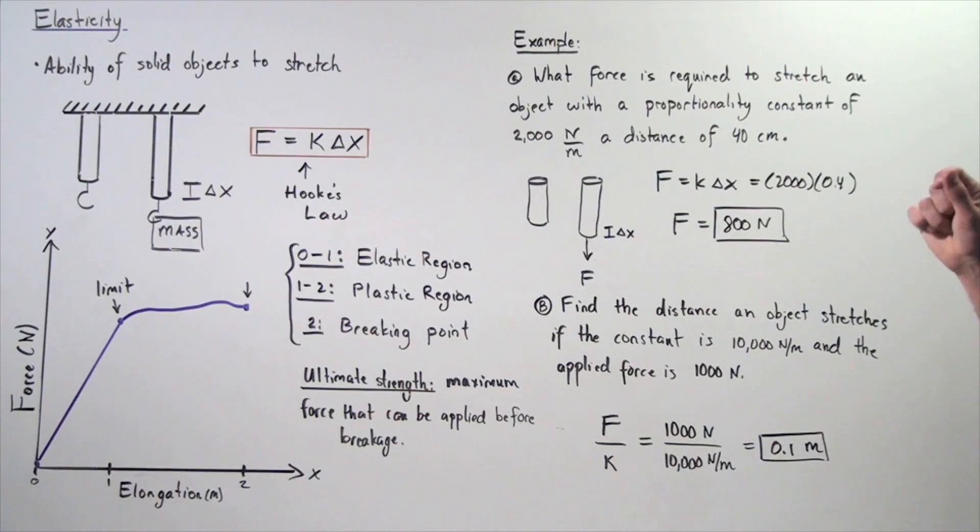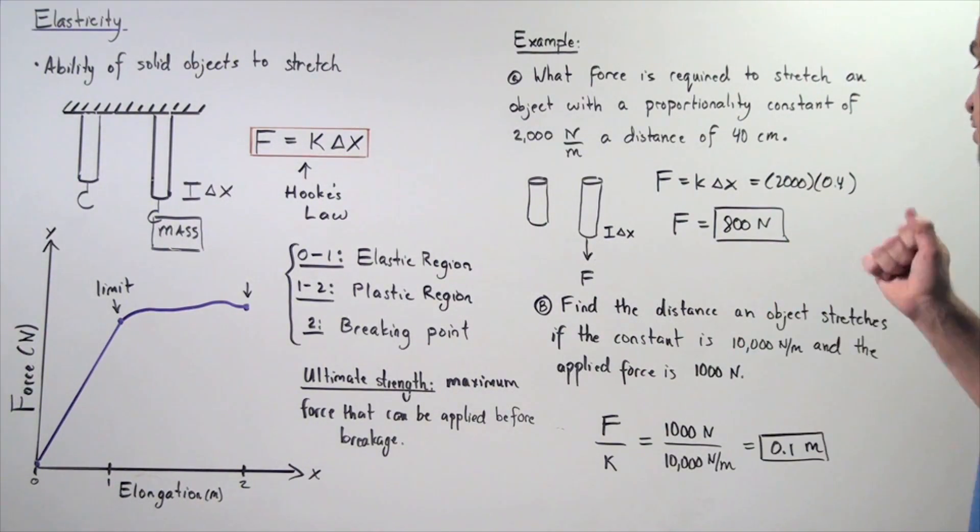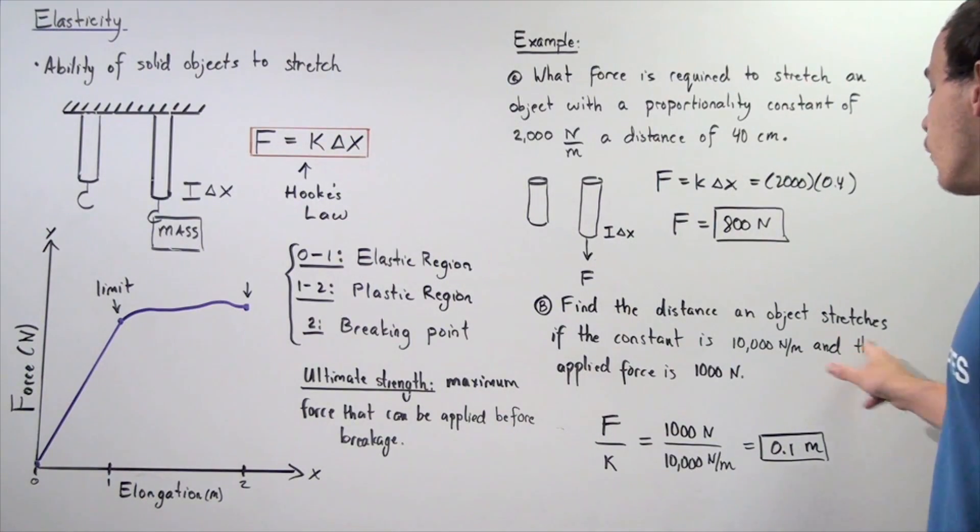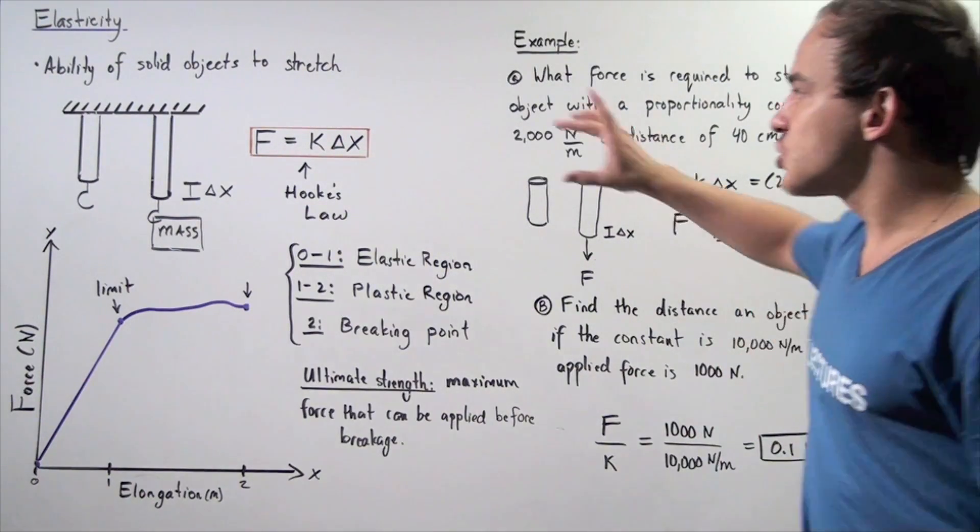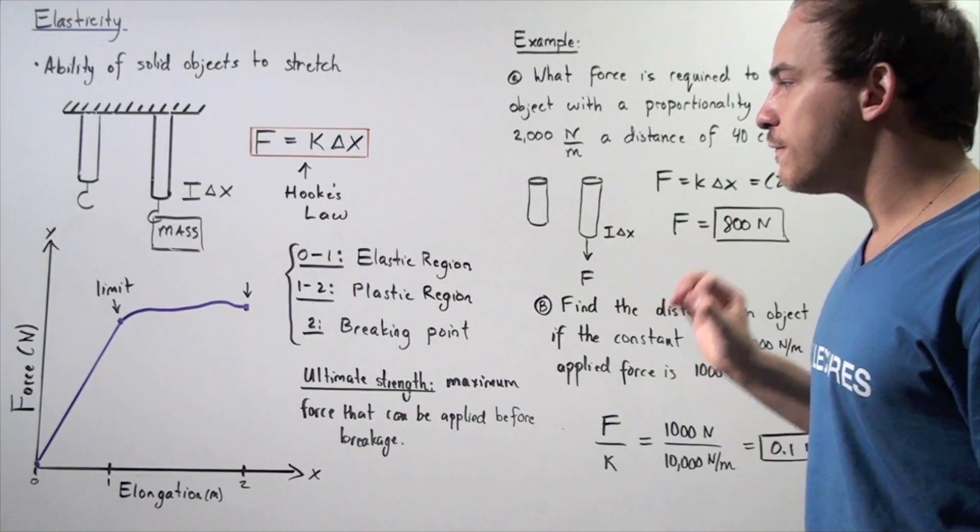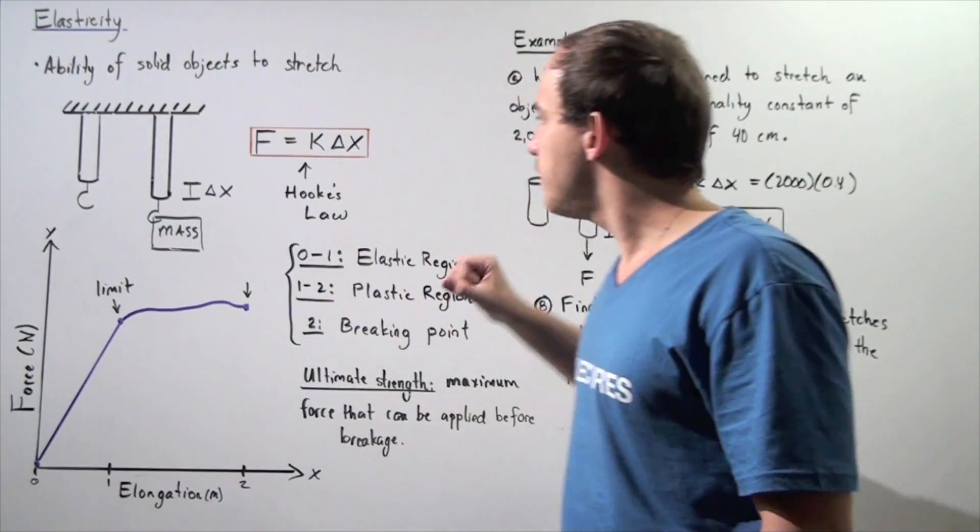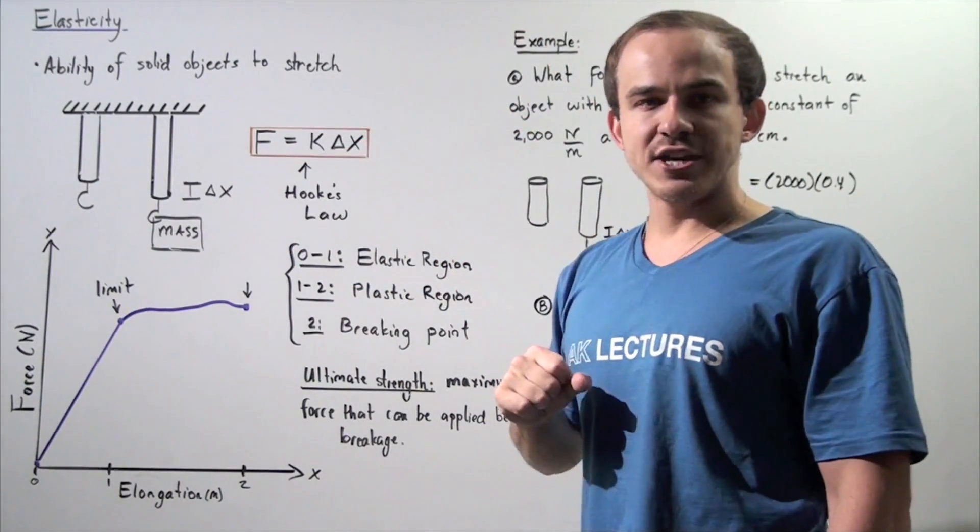Find the distance an object stretches if the constant is 10,000 newtons per meter, and the applied force is 1,000. So, once again, we assume that the force is lower than the limit, so we can use this equation.